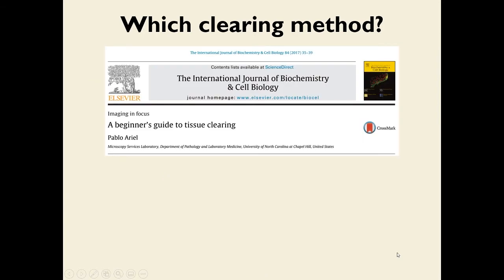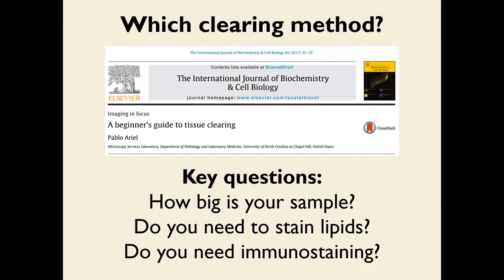If you're new to this field and want a quick primer, I wrote a small review called 'The Beginner's Guide to Tissue Clearing' which outlines the very basic things you need to think about when trying to figure out what clearing method is most appropriate for your biological problem. There are a few key questions to think about when deciding on a clearing method: how big is your sample, whether you need to stain lipids, and whether you need immunostaining or will use fluorophores already embedded in the sample.